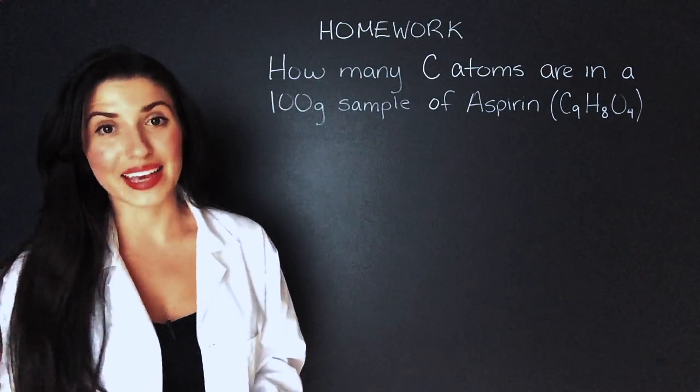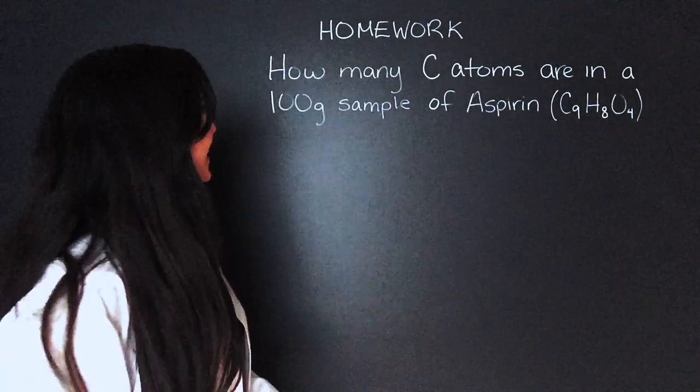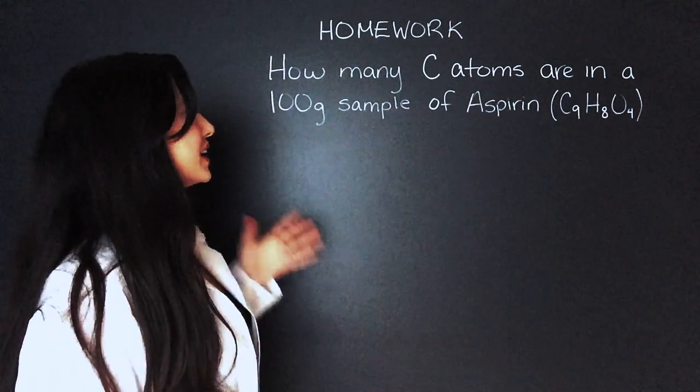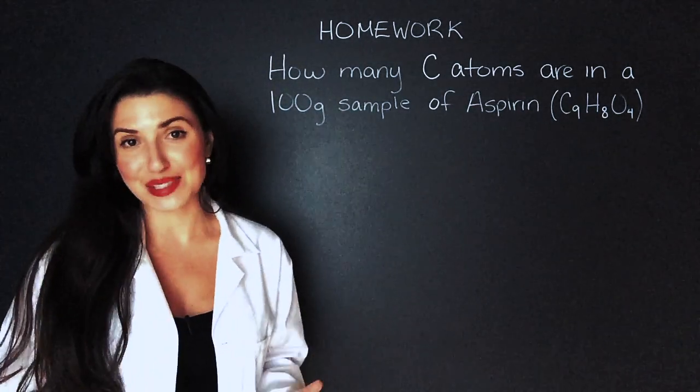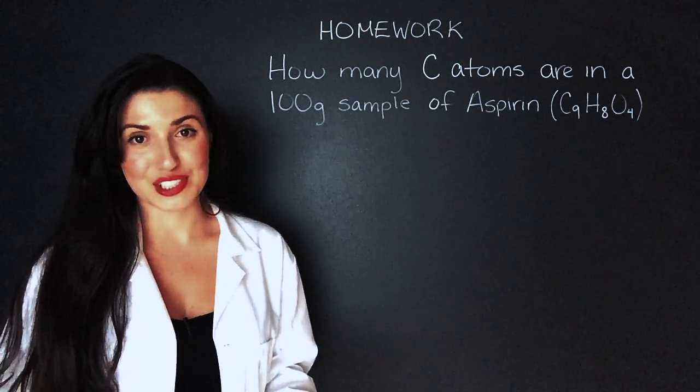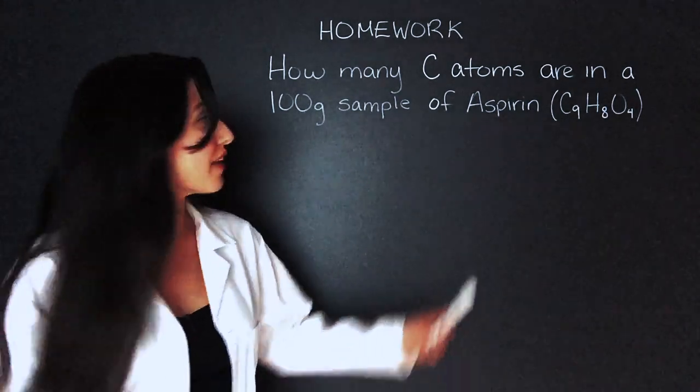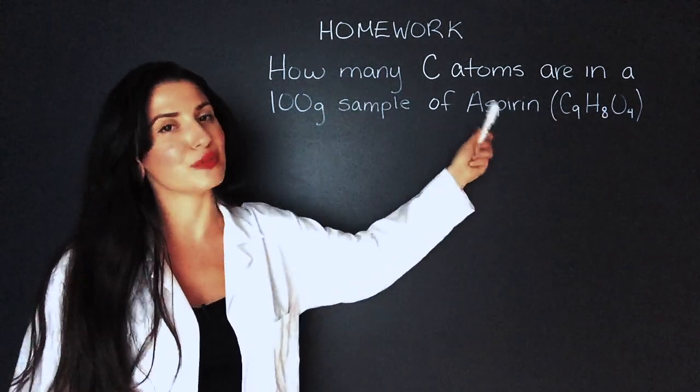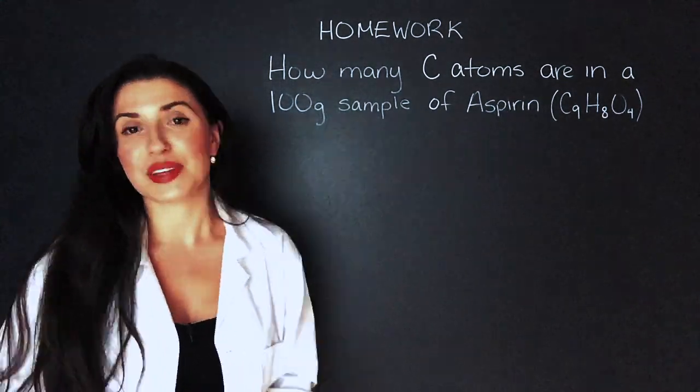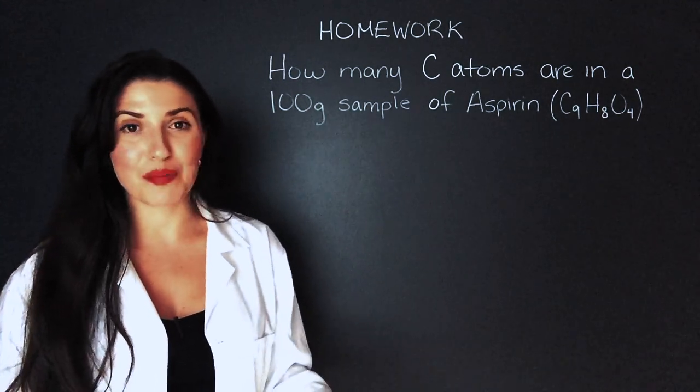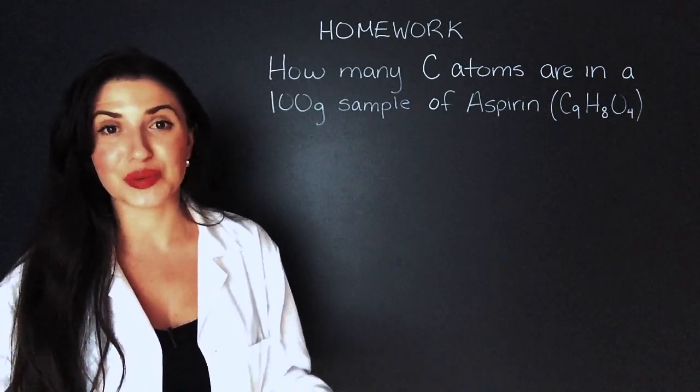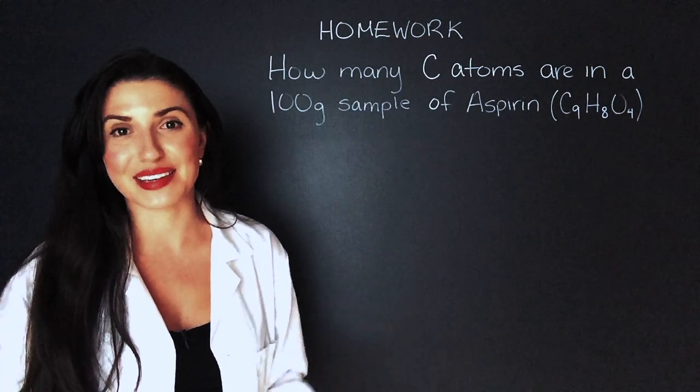In my last video I gave you this homework question. How many carbon atoms are in a 100 gram sample of aspirin? The first thing we have to do is find out how many molecules of aspirin we have. Because we can't find how many carbon atoms if we don't know how much aspirin we have. It's pretty simple. Aspirin is a molecule so we're going to use the equation we used last video to find the number of molecules.